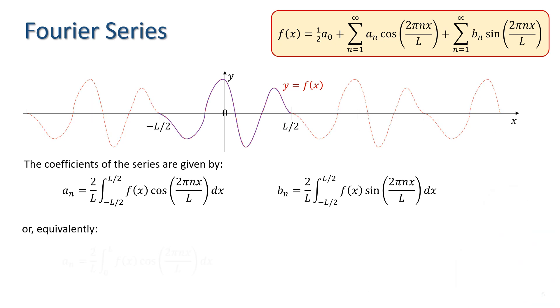Or equivalently, they can be defined using these integrals over the interval 0 to L. Well-behaved functions such as smooth functions have Fourier series that converge to the original function. That is, as we increase the number of terms in the series, the sum gets closer to the function.